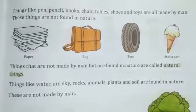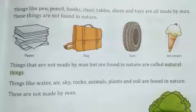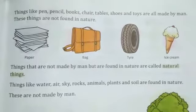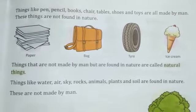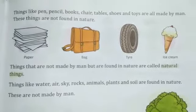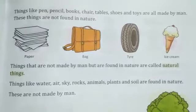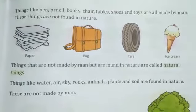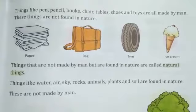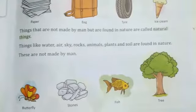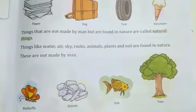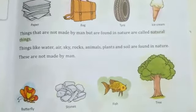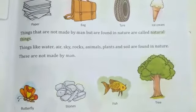Suppose paper, bakes, tire, ice cream — these are all man-made things. Now, things that are not made by men but are found in nature are called natural things. Things which we have not created ourselves, like air, water, sky, rock, animals, plants, and soil — these are all found in nature and not made by man. Butterfly, stones, fish, and trees are all natural things.